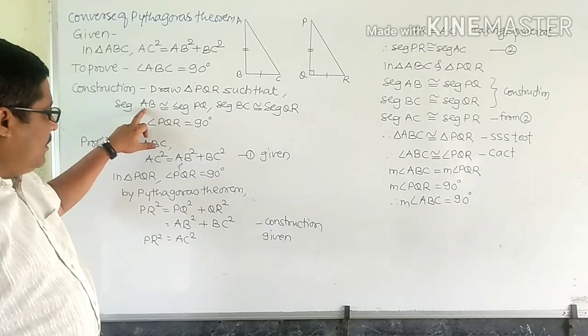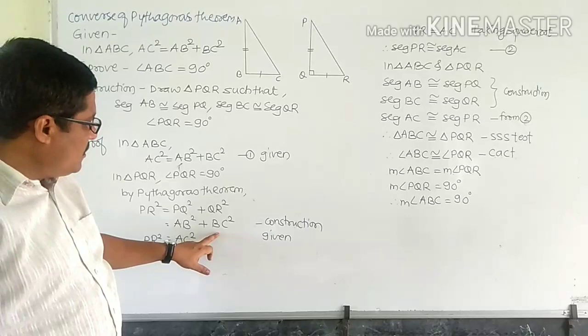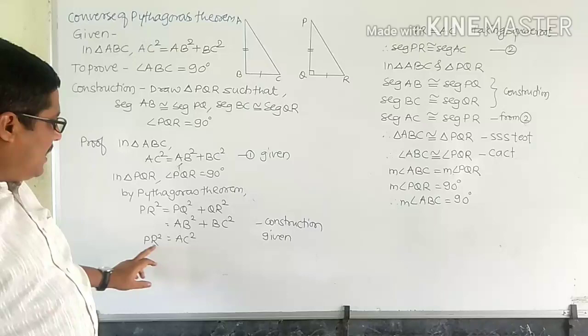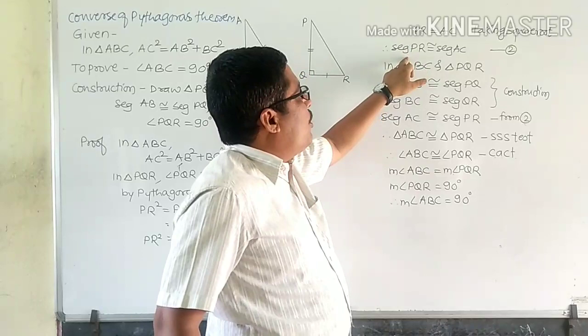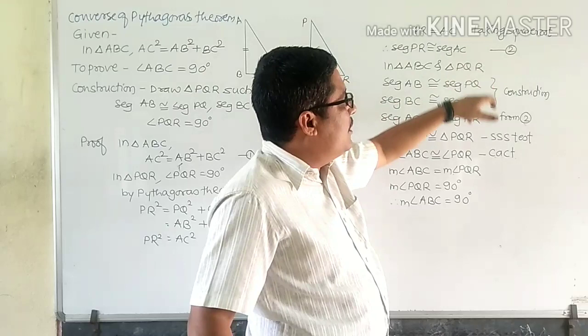Since PQ is congruent to segment AB, PQ² can be replaced by AB², and segment QR is congruent to segment BC, so QR² can be replaced by BC². So AB² + BC² = AC², and we can replace AB² + BC² by AC². Therefore PR² = AC², and taking square root on both sides, we get PR = AC, or segment PR is congruent to segment AC. Let this be equation number 2.